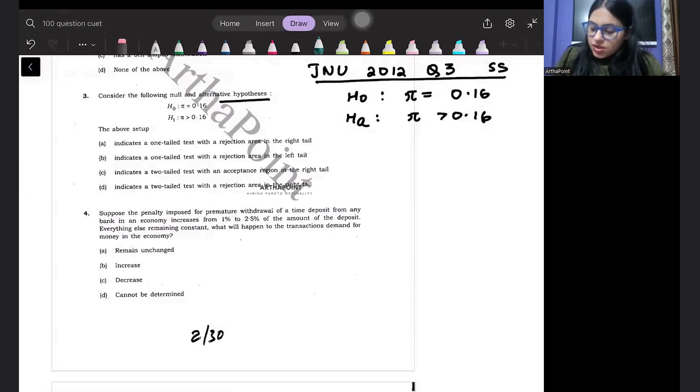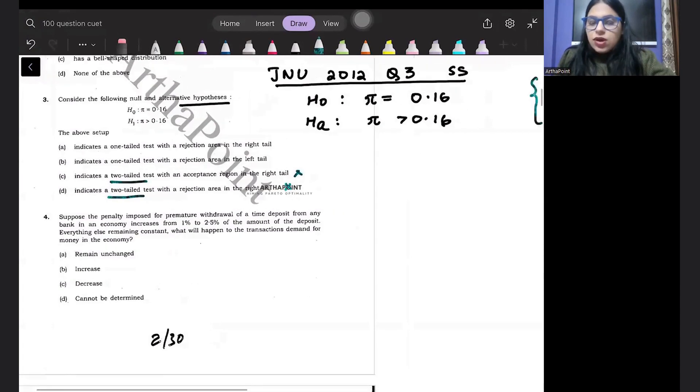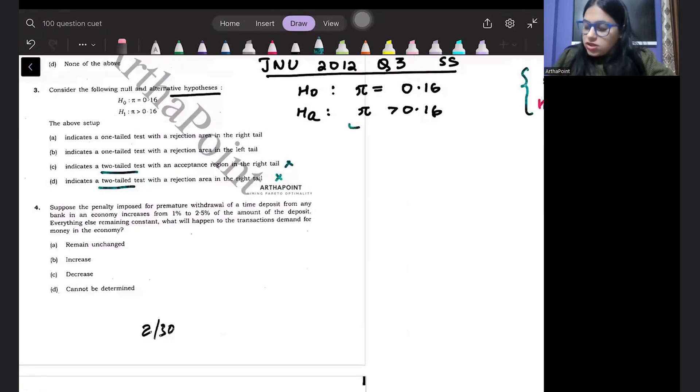Okay, now let's see. Two-tailed test is cancelled. The option is gone. Now, I want to talk about one-tailed test. It is saying that my alternative suggests that μ is greater than 0.16, right? So, if I have 0.16 here, 0.16 is a positive number. I have 0 here. These are my negative numbers.